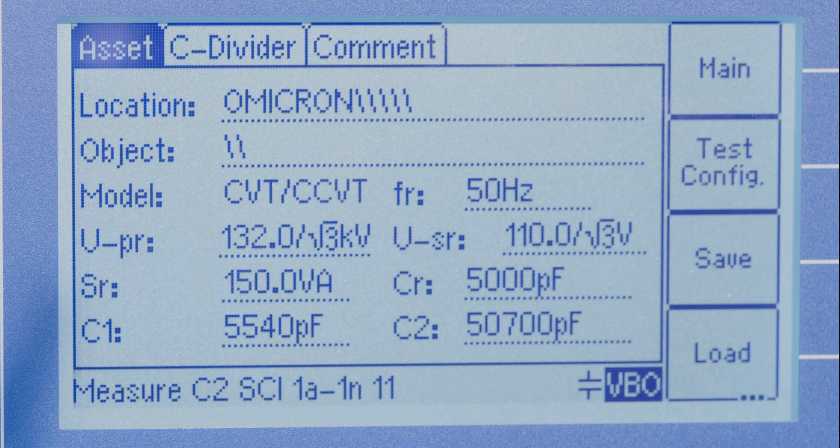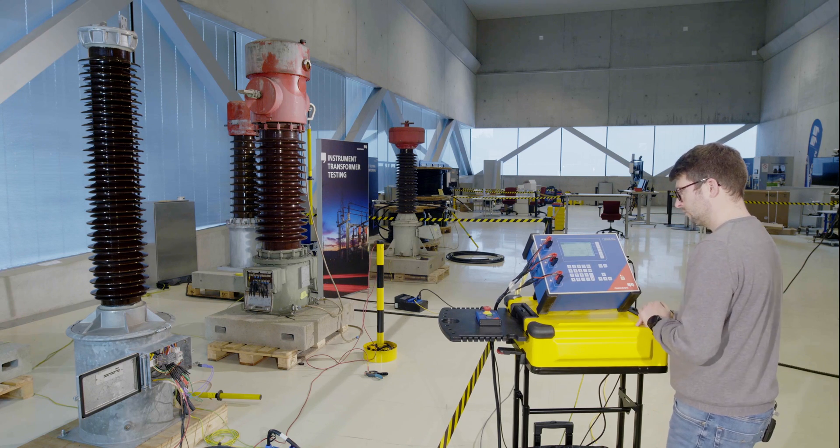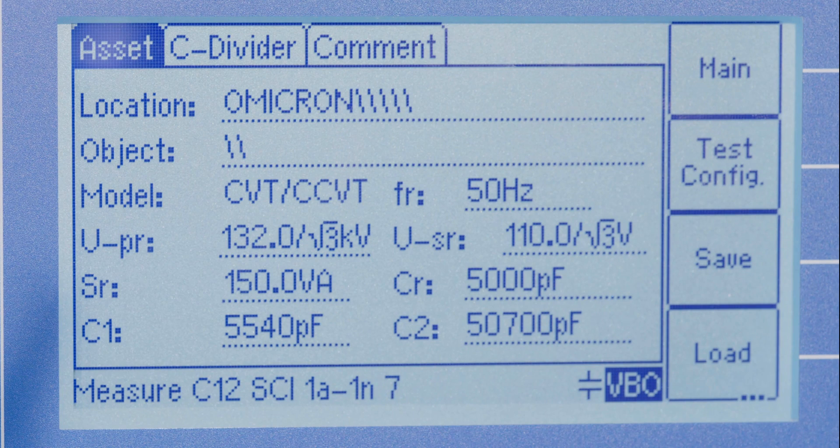The first measurement determines the frequency-dependent short-circuit impedance including C2, and the second measurement measures the frequency-dependent short-circuit impedance including C1 and C2.